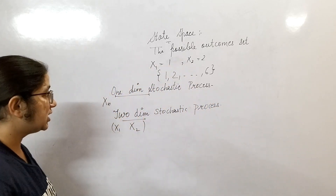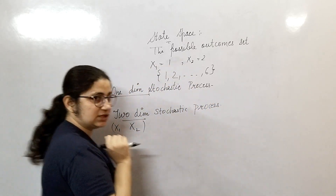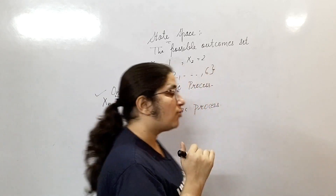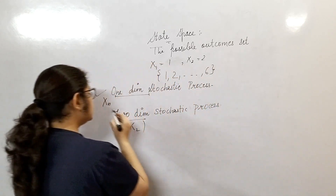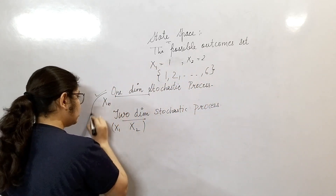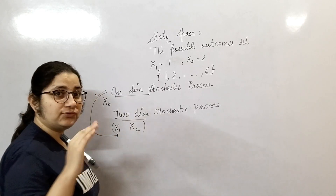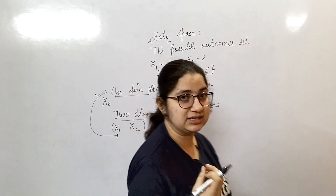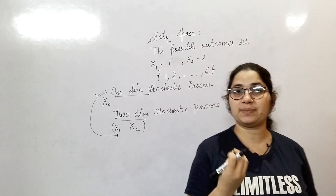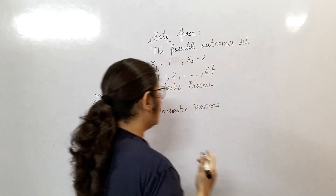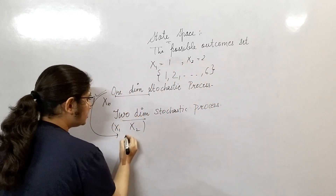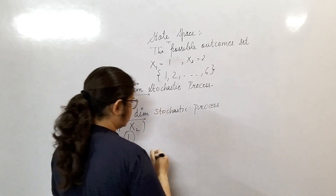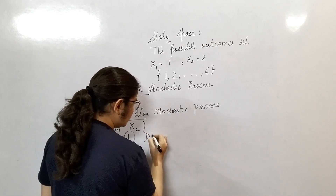But now we will discuss only one-dimensional stochastic processes. A one-dimensional stochastic process is classified into four different types depending upon the state space — that is, depending upon the possible outcomes.